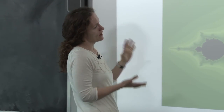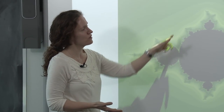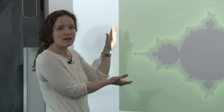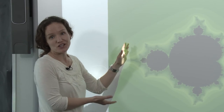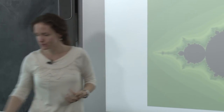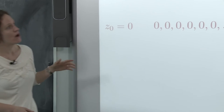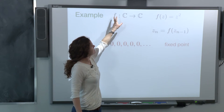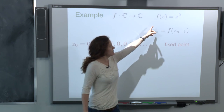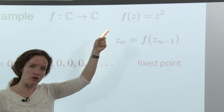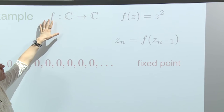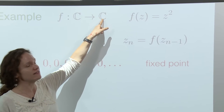I want to show you how to find the Fibonacci sequence and the golden ratio in the Mandelbrot set, a very famous fractal that arises in dynamical systems. We start by thinking of a polynomial — for instance, f(z) equals z squared — where z is a complex variable. This polynomial takes a complex number z and returns z squared. Because the domain and range are the same, I can plug z into the function, get z squared back, and then feed that output back into the function again.